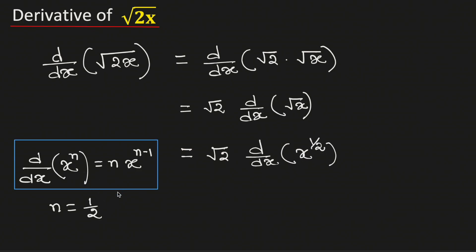Now using this power rule of derivatives with n is equal to one half, this can be written as root 2 times one half times x to the power one half minus one.